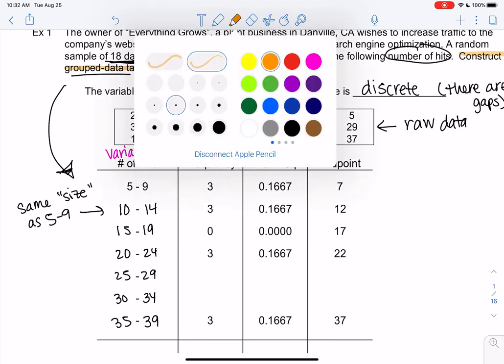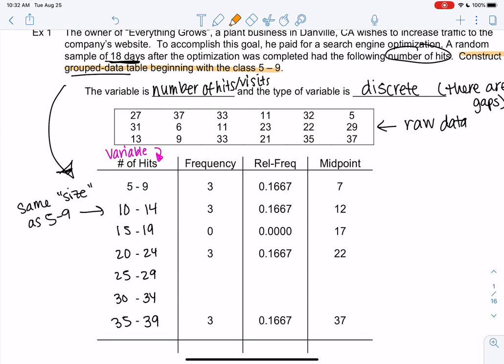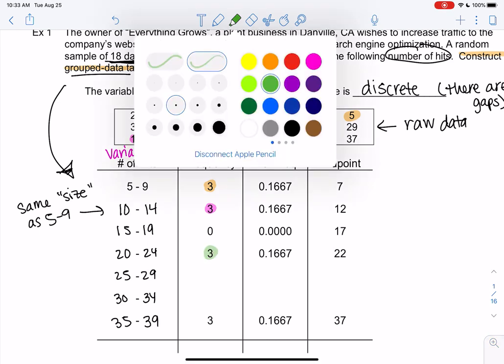Let me show you how frequency works. Frequency is just how many times does something show up. Five through nine means five, six, seven, eight, or nine. So I have a five, I have a six, and I have a nine. And that's how I came up with three. There are three numbers that show up. 10 through 14, we have 11, 11, and 13. And that's how I came up with three. It looks like 15 through 19 never shows up. 20 through 24, I found 21, I found 23, and I found 22. So there's three numbers.